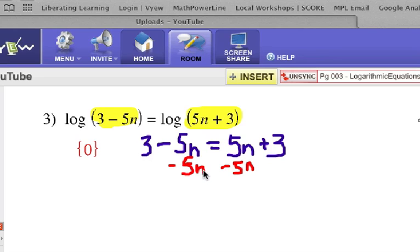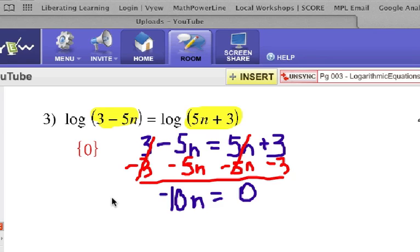And I need to get rid of that 3 over here by subtracting it, and make sure you subtract it on the other side. So we've created some opposites. We'll be canceling there and there, and here's the next step. Negative 10n equals 0, and of course, n would have to be 0.